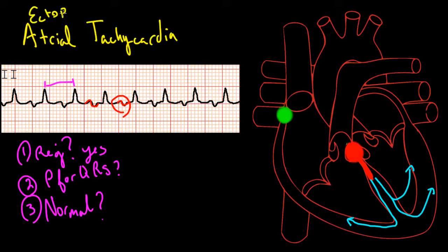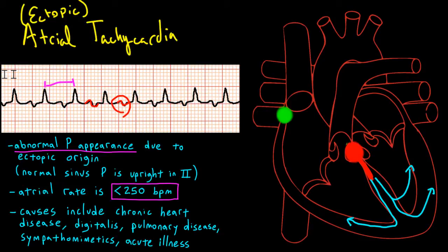In atrial tachycardia, you have tissue outside the SA node that's firing faster than the sinoatrial node. So this leads to the main signals in the atria and leads to atrial contractions. Because it's in a position different from the SA node, the P wave looks different on the EKG.